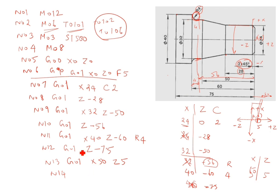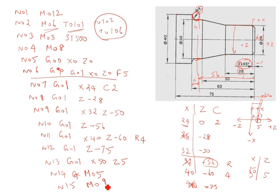N14 onwards: we turn the spindle and coolant off. M05 is spindle off. N15: M09, which is coolant off. N16: M30, which is the end of the program.